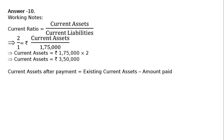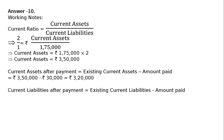Current assets after payment: existing current assets Rs 3,50,000 minus amount paid Rs 30,000 equals Rs 3,20,000. Current liabilities after payment: existing current liabilities Rs 1,75,000 minus amount paid Rs 30,000. Hence, current liabilities — such as bills payable or creditors — will be reduced to Rs 1,45,000.